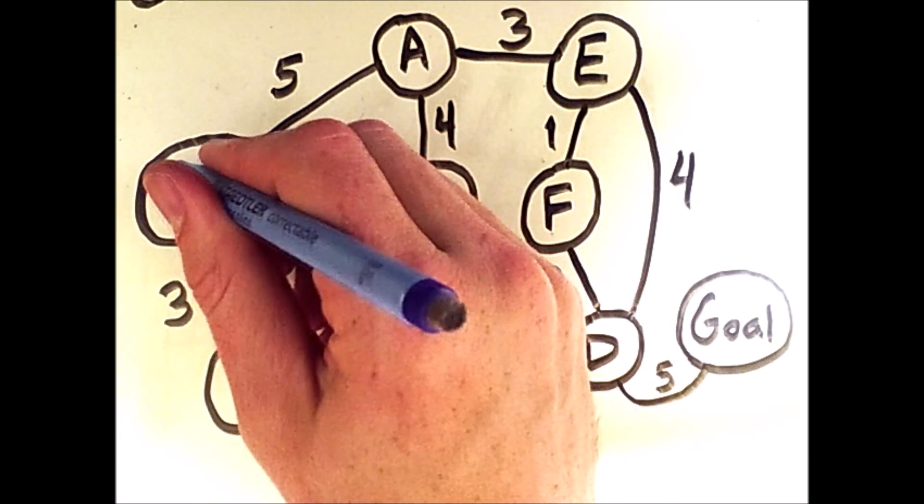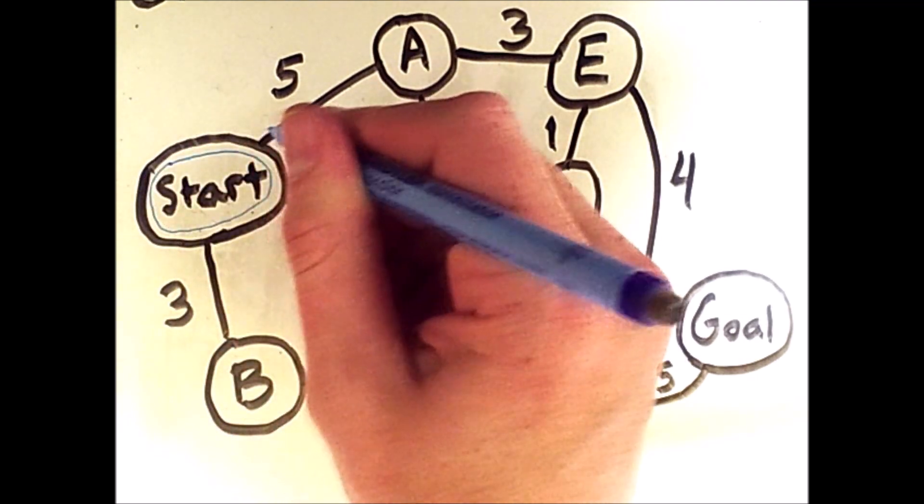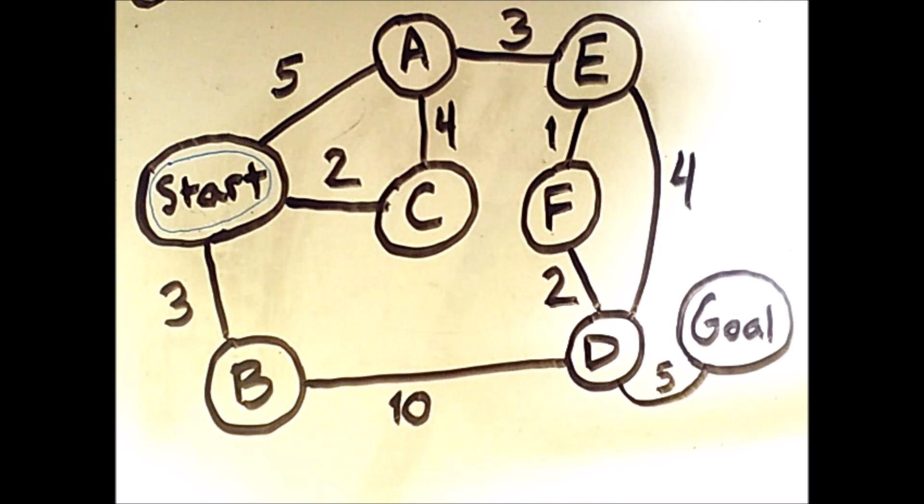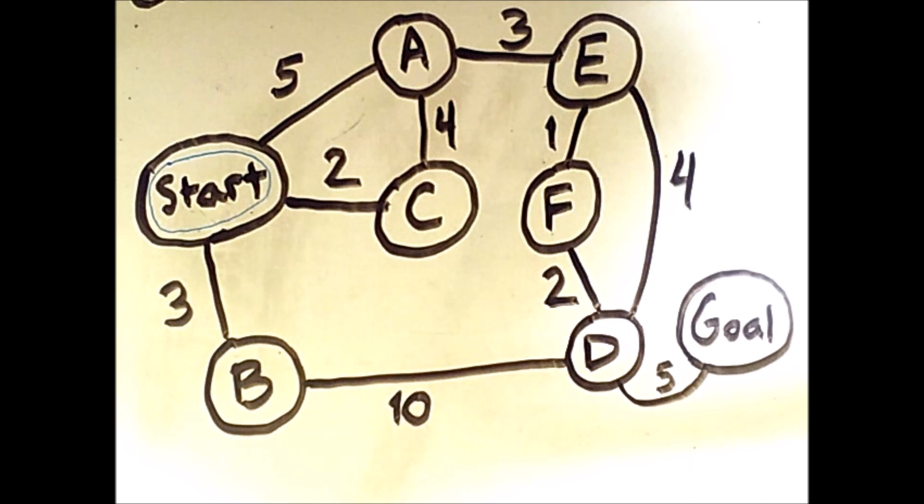That means that the start state is what we call on the fringe of the places we're going to search. We haven't actually visited it yet, but because it is on the fringe, it's the only place we can visit, therefore we go there pretty much immediately.